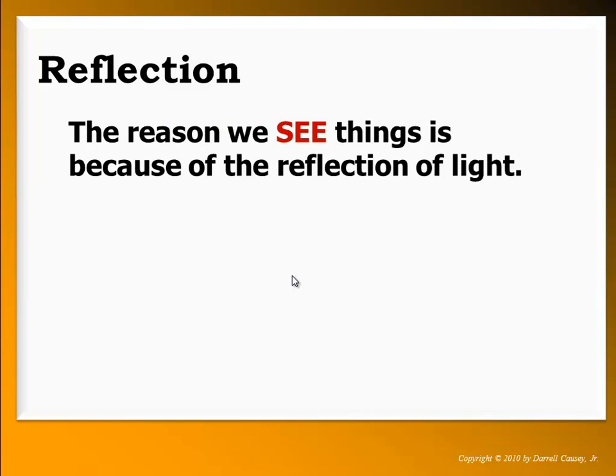Reflection is the whole reason we see things. Light reflects off of objects and comes back to your eyes, where your eyes absorb and interpret it, send it to your brain, and you see colors and objects.